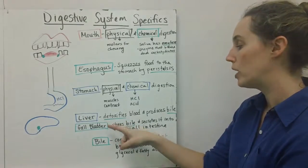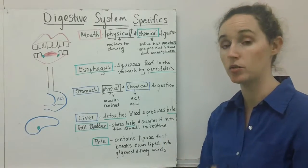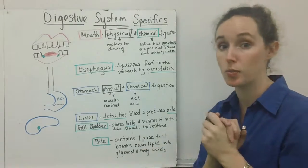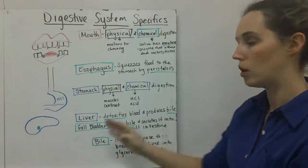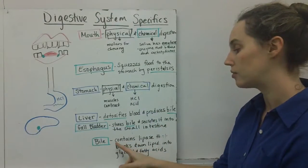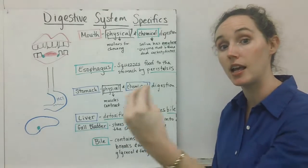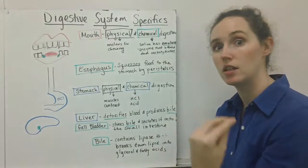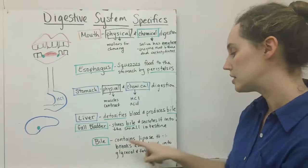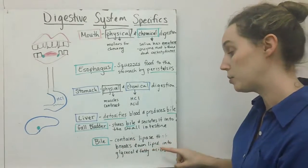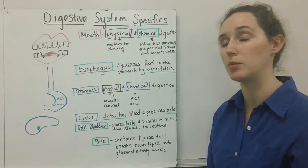This bile is then stored in the gallbladder, which is just like a little pouch right next to the liver. When it is time to digest food, the gallbladder empties the bile from itself into the first part of the small intestine. Bile is a fluid that contains lipase, an enzyme that breaks down lipids. So bile contains lipase; it's going to break your lipids into glycerol and fatty acids, their lipid building blocks.